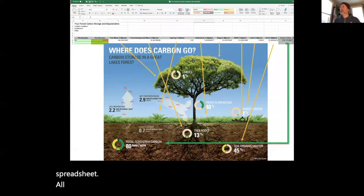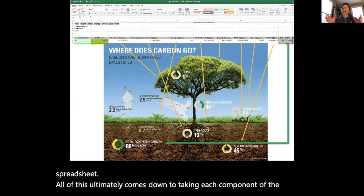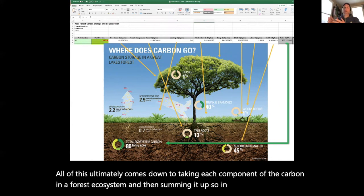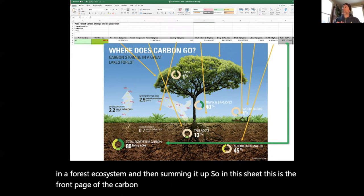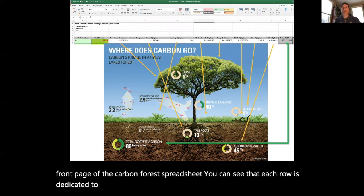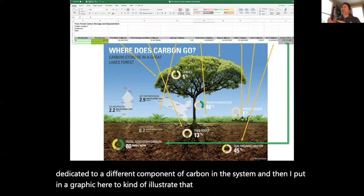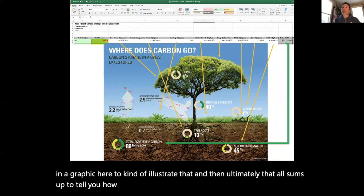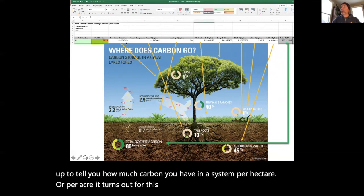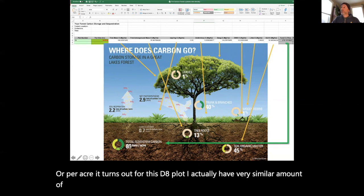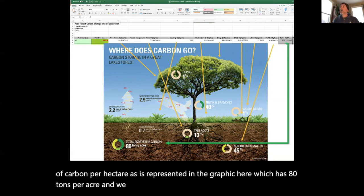All of this ultimately comes down to taking each component of the carbon in a forest ecosystem and then summing it up. This is the front page of the carbon forest spreadsheet. You can see that each row is dedicated to a different component of carbon in the system. I've put in a graphic here to illustrate that. Ultimately, that all sums up to tell you how much carbon you have in a system per hectare or per acre. It turns out for this D8 plot, I actually have a very similar amount of carbon per hectare as is represented in the graphic here, which has 80 tons per acre. We have about 190 tons per hectare in that plot.